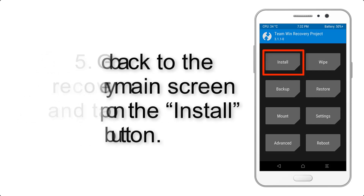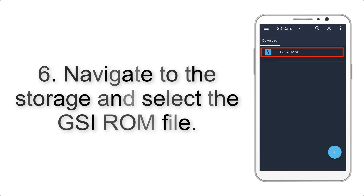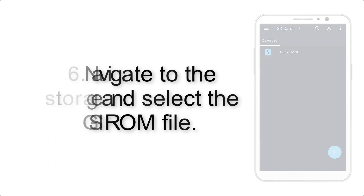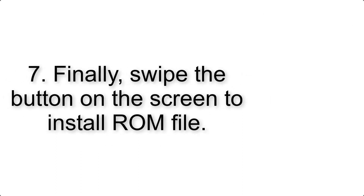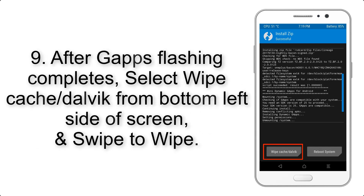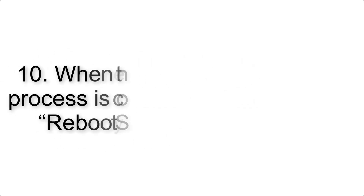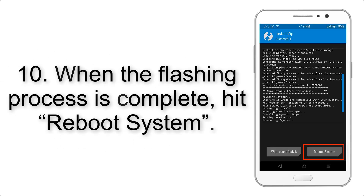Step 6: Navigate to the storage and select the GSI ROM file. Step 7: Swipe the button on the screen to install the ROM file. Step 9: After GApps flashing completes, select Wipe Cache and Dalvik from the bottom left side of the screen and swipe to wipe.